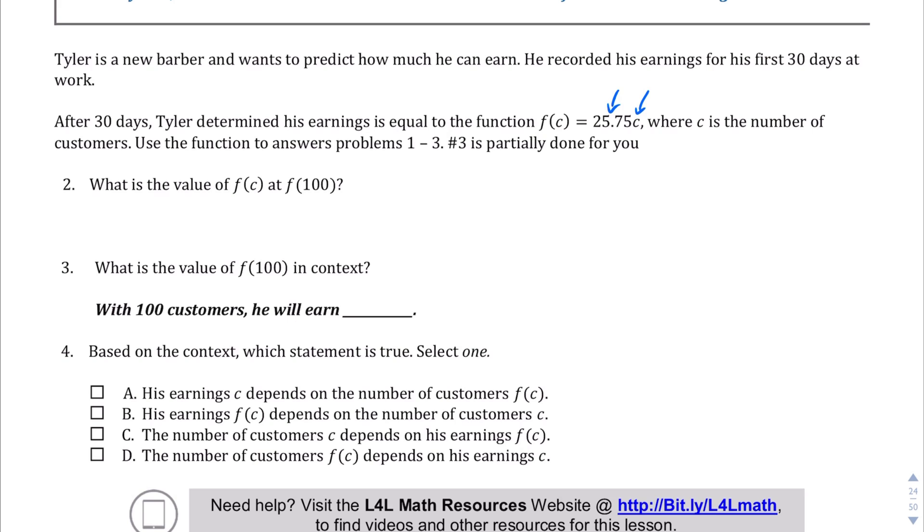So what is the value of f(c) at f(100)? We'll just plug in 100 into that equation. So we're going to write f(100) equals 25.75 times 100. And if you punch that into the calculator, you should get 2575 because that decimal place moves over twice. So the value after 30 days, based on 100 customers, he should make $2,575. And that's what question 3 is: with 100 customers, he will earn $2,575.